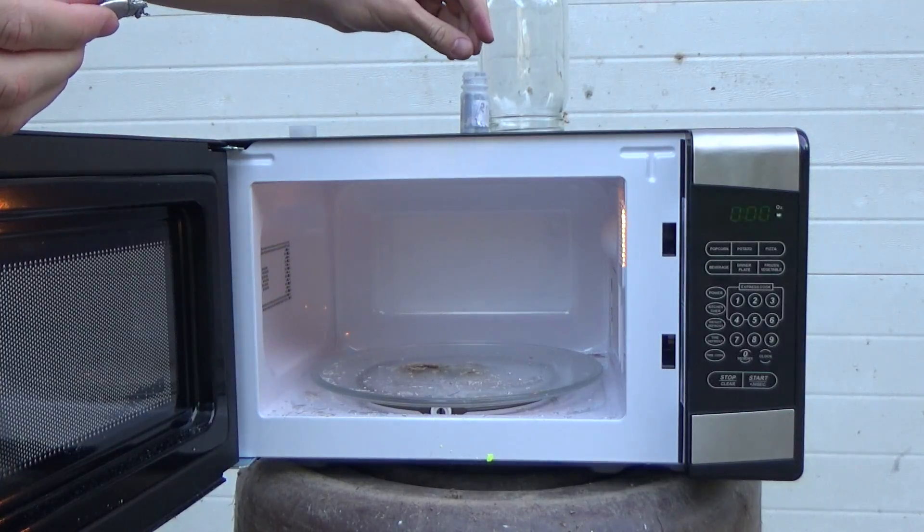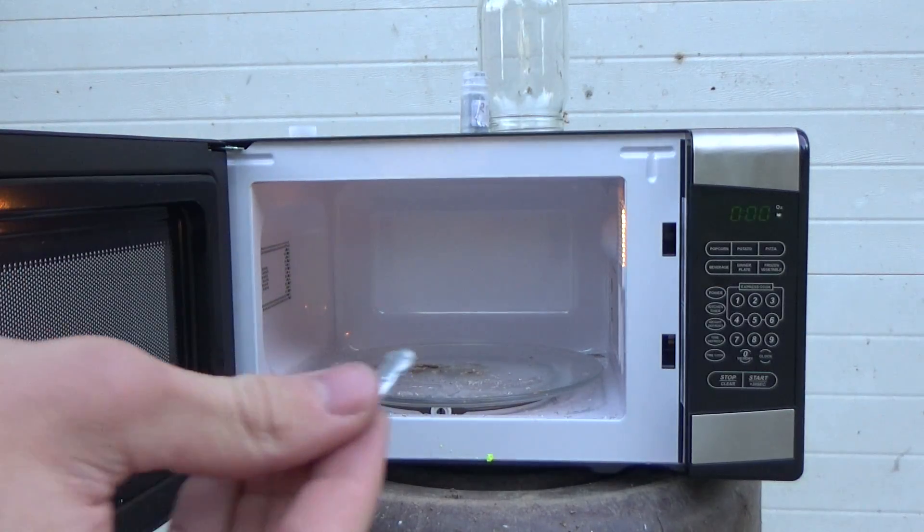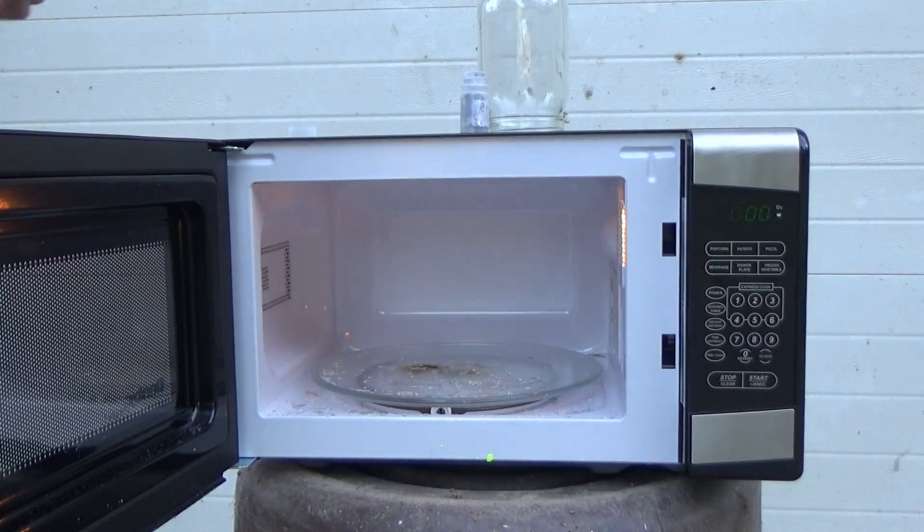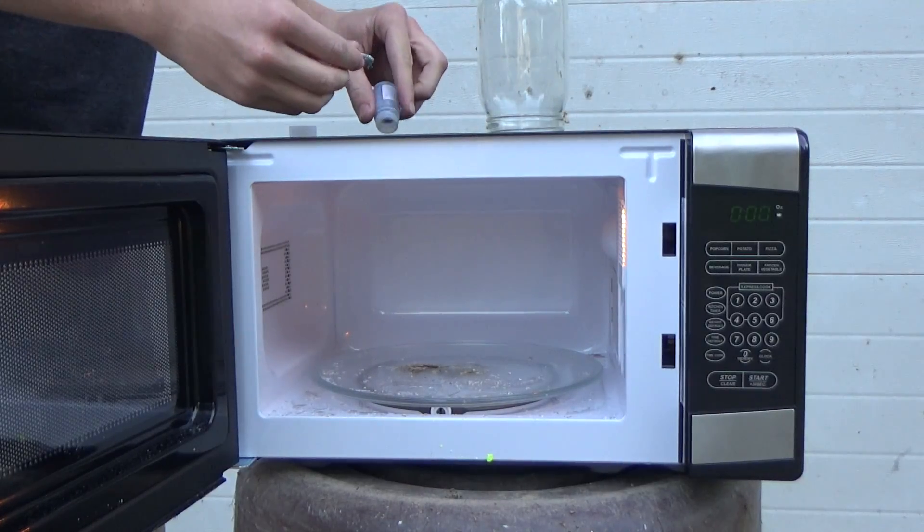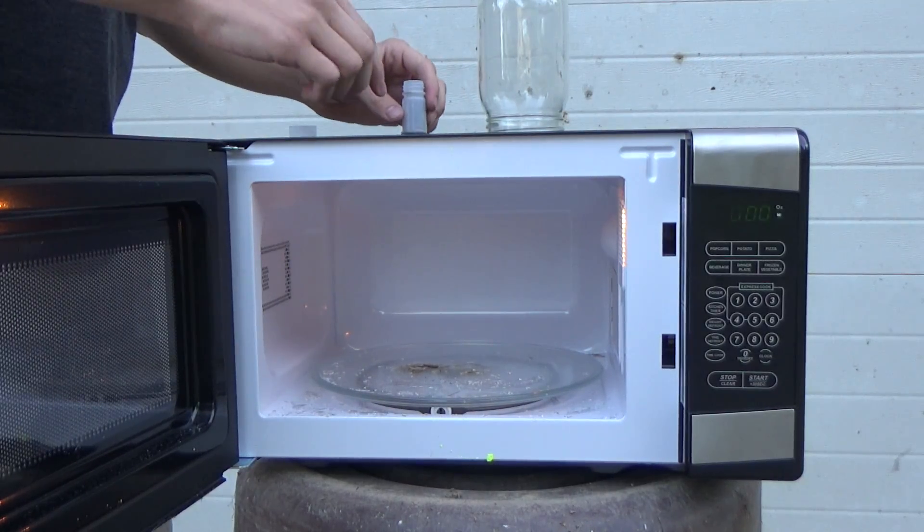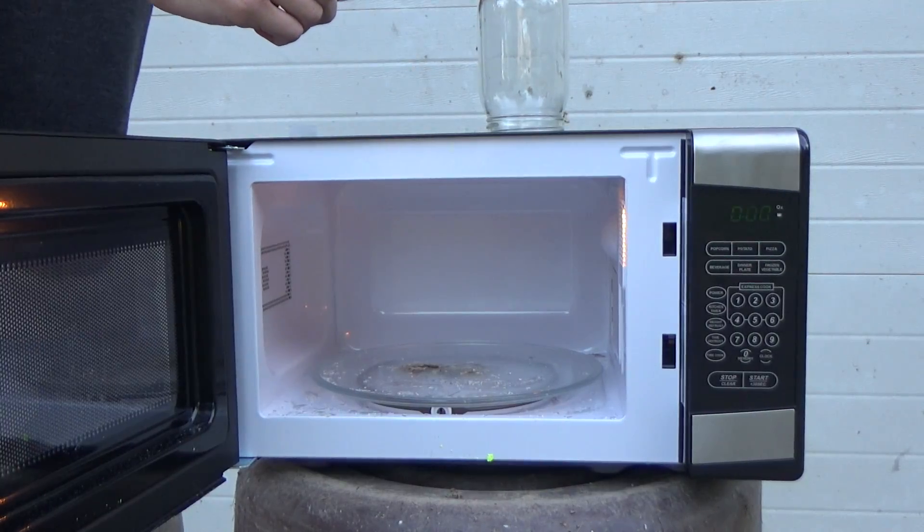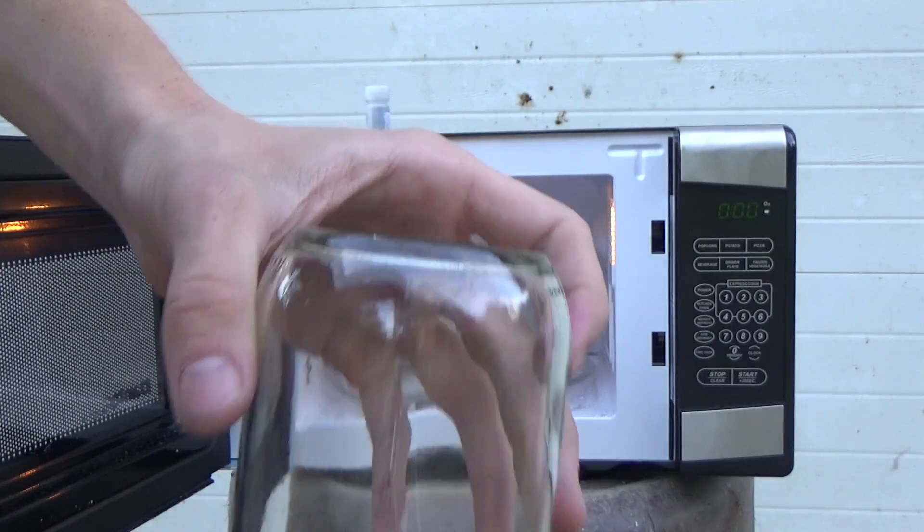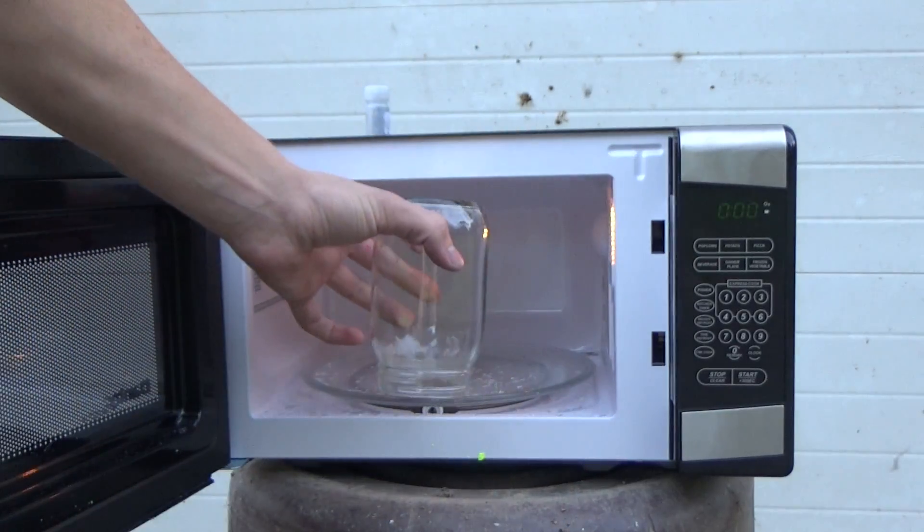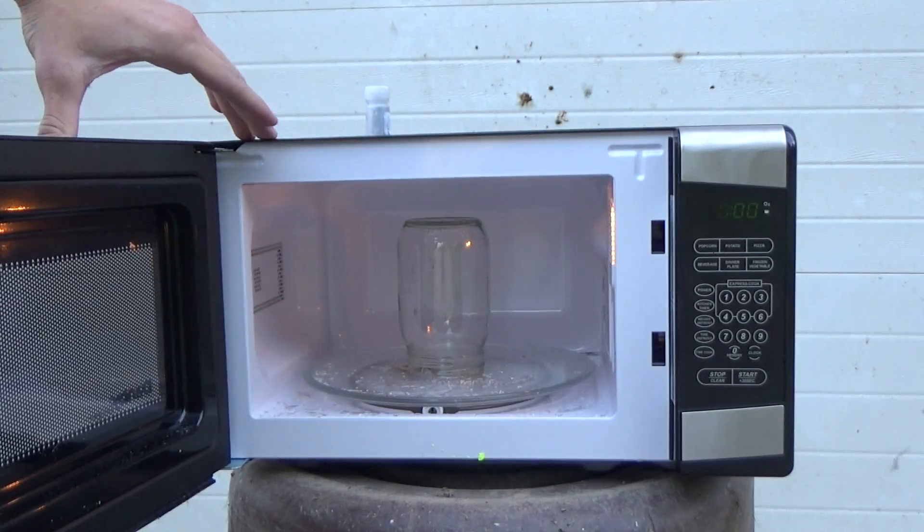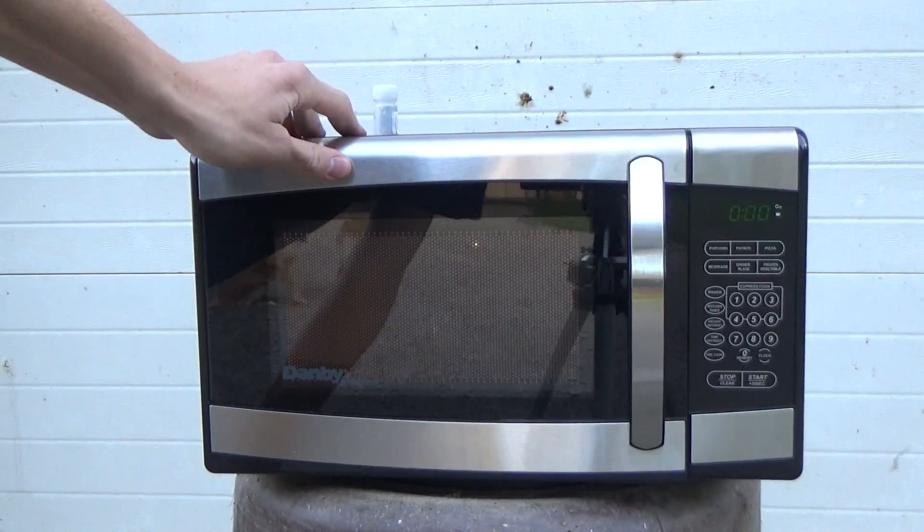So what I want to find out is yes, gallium is a metal and metals and microwaves usually don't really get along too well, but will it melt? That is the real question that I have today. So I put a little bit of gallium on top of this jar and I'm gonna just put it inside of this microwave. Let's just go for about one minute and we're just gonna see what happens.